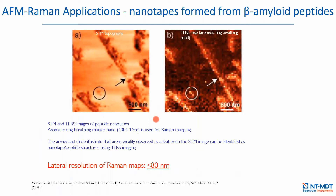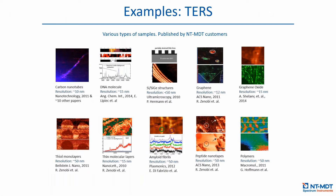Another example of TERS: nanotapes formed from beta-amyloid peptides. The TERS was done in STM mode — researchers did STM topography to see the samples, then did the TERS map, clearly showing defined features of the sample with a resolution of less than 80 nanometers — optical resolution. TERS has many different applications: here are examples published by our customers including TERS on carbon nanotubes, DNA molecules, graphene, graphene oxide, TMD monolayers, amyloid fibrils, and different polymers. We have more than hundreds of publications on TERS applications from our system.